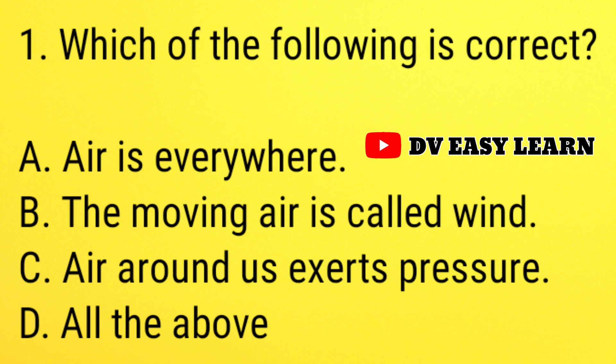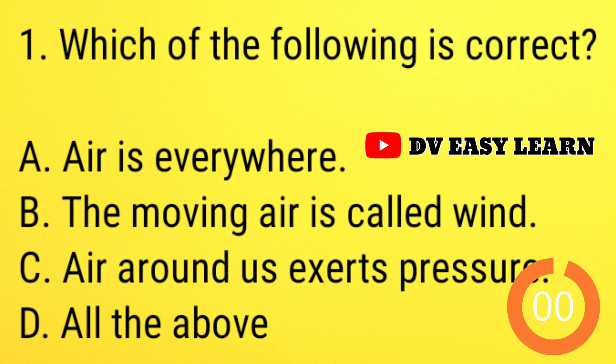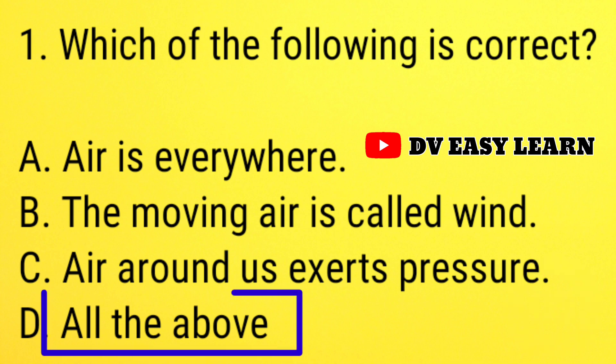Question number 1: which of the following is correct? Correct answer: all the above. Air is everywhere, the moving air is called wind, air around us exerts pressure.